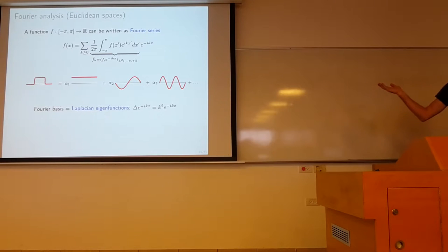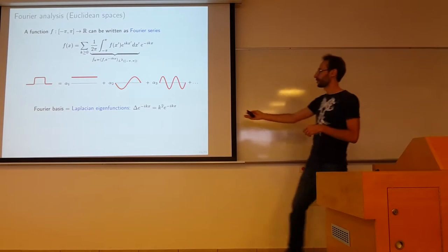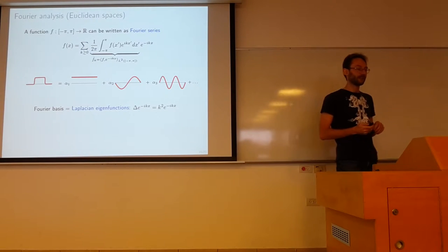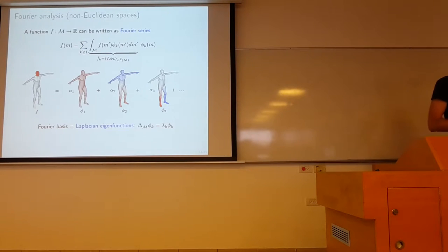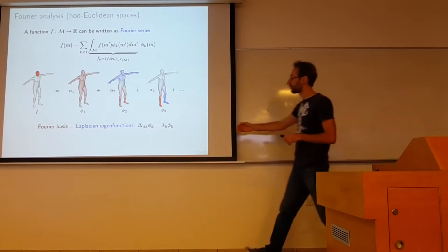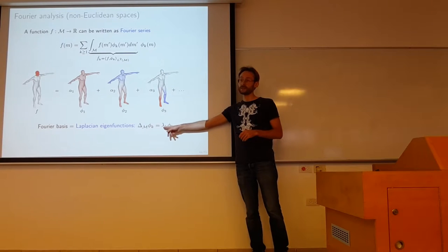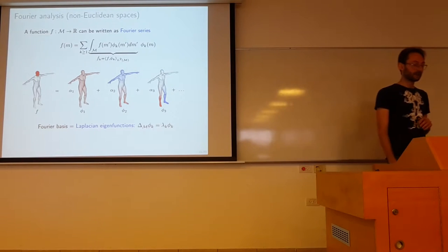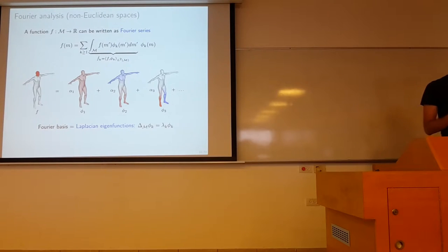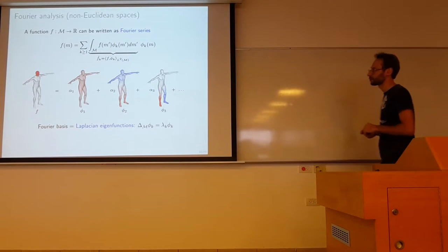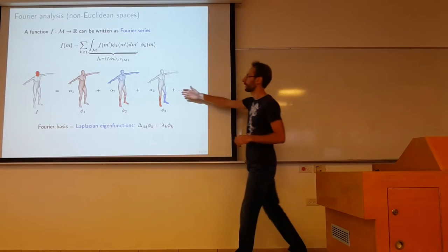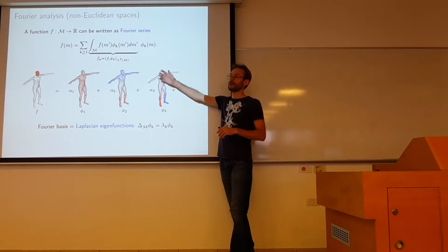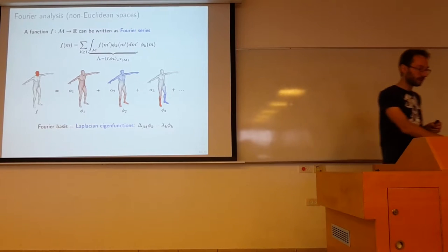The same idea can be applied on non-Euclidean domains. The eigenvalues of the Laplacian play the role of frequencies: the zero frequency is the constant eigenfunction — that's the DC in signal processing terms. Higher eigenvalues correspond to higher frequencies, meaning that the eigenfunctions vary more rapidly on the manifold. That's all you need to know about differential geometry. Now we go to correspondence.